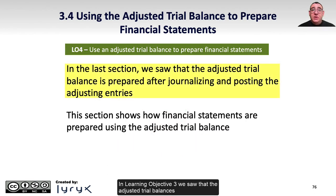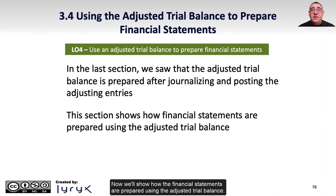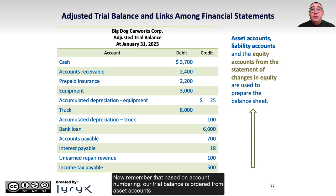In Learning Objective 3, we saw that the adjusted trial balance is prepared after journalizing and posting all of the adjusting entries. Now we'll show how the financial statements are prepared using the adjusted trial balance. Based on account numbering, our trial balance is ordered from asset accounts to liability accounts to equity accounts, and then revenues and expenses which will appear on the income statement.